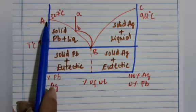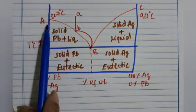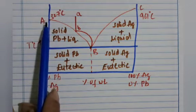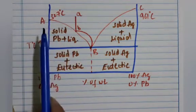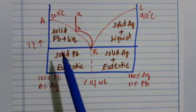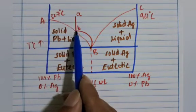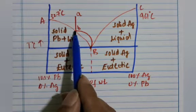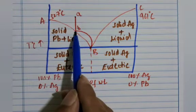The Argentiferous lead is heated above the melting point so that the system consists of only the liquid phase, which is represented by point A. It is then allowed to cool, and the temperature of the melt decreases along the curve AB.